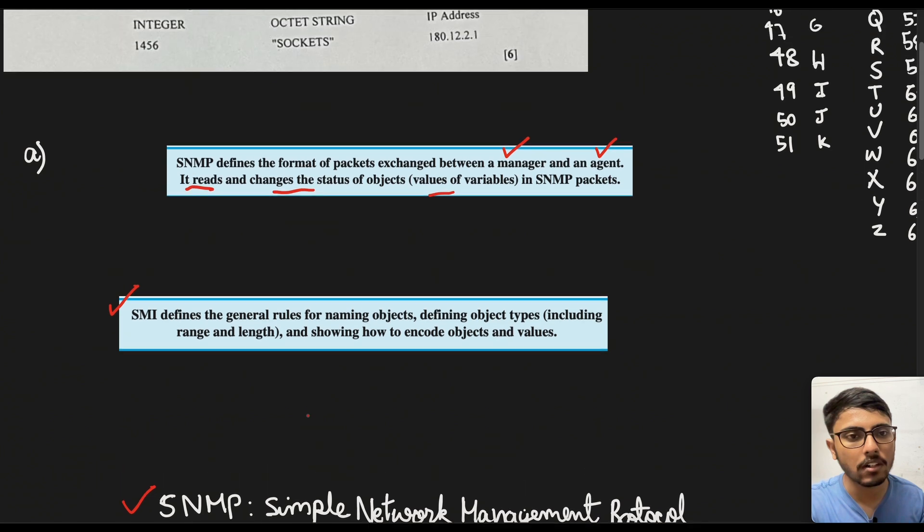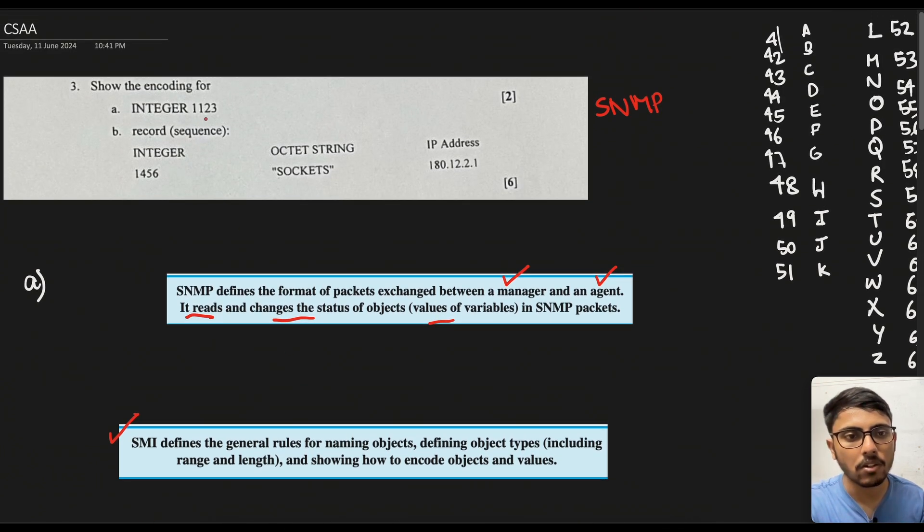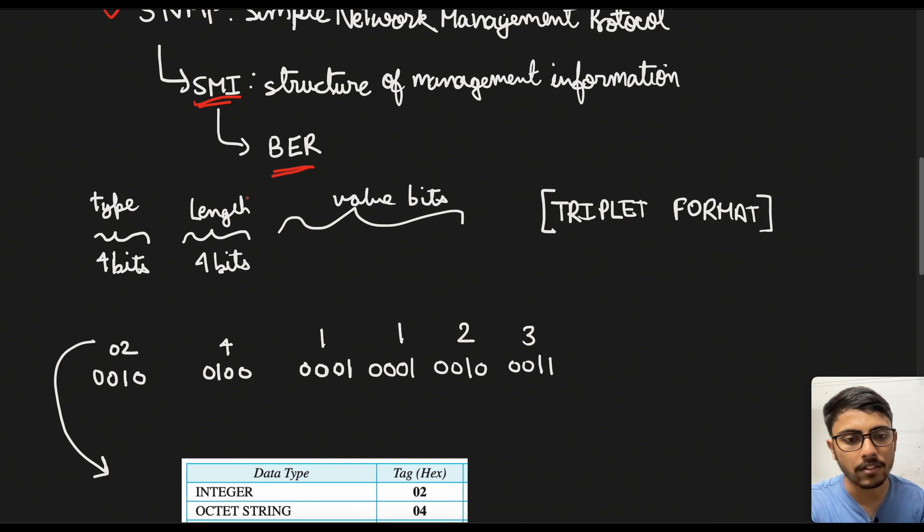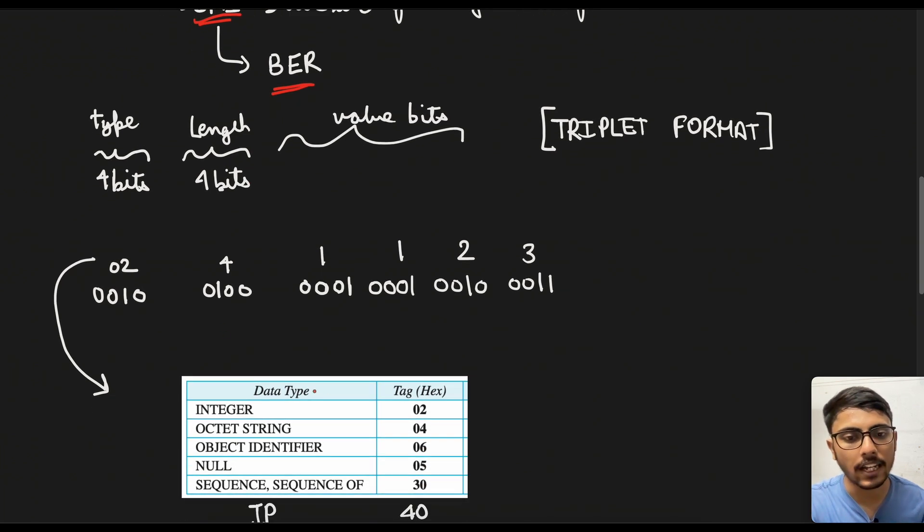So if we come to the original problem we have integer 1123. So in that we need to first know that all the different data types have their tag separate. So integer is 02, octet string is 04, object identifier is 06, null is 05, and sequence and sequence of are 30. So object identifier is basically the pointer that we use in C++. Null is simple.